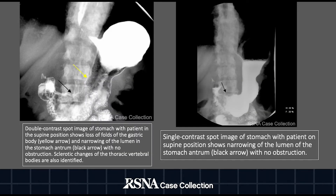The double contrast spot image of the stomach on the left was taken with the patient in the supine position and demonstrates a loss of folds in the gastric body, shown by the yellow arrow, and narrowing of the lumen in the stomach antrum, shown by the black arrow, with no sign of obstruction. Sclerotic changes of the thoracic vertebral bodies were also identified. The single contrast spot image on the right was taken with the patient in a supine position, showing narrowing of the lumen of the stomach antrum, denoted by the black arrow, with no obstruction.